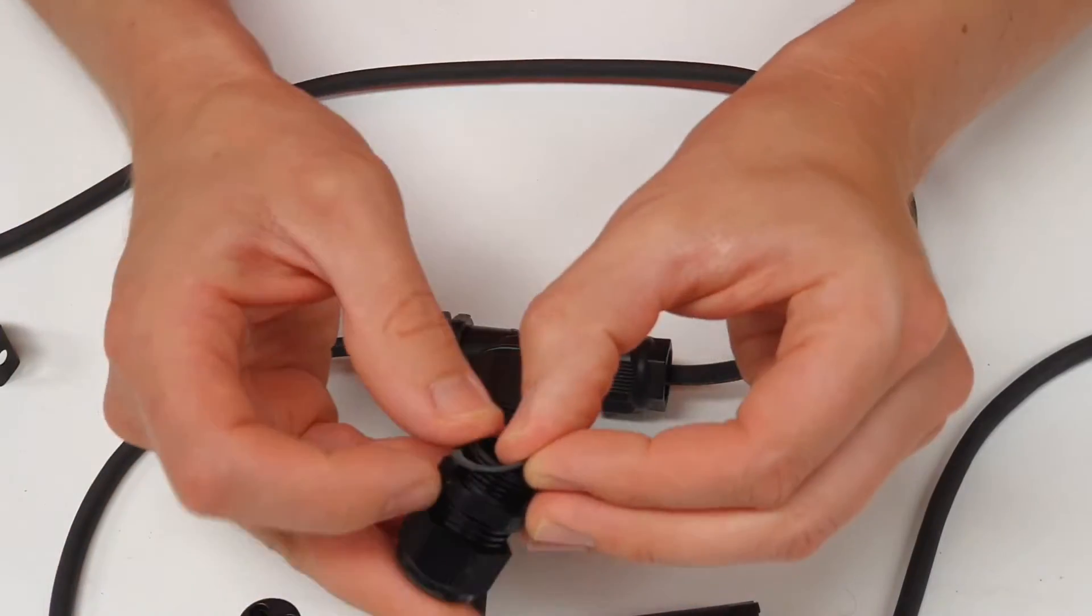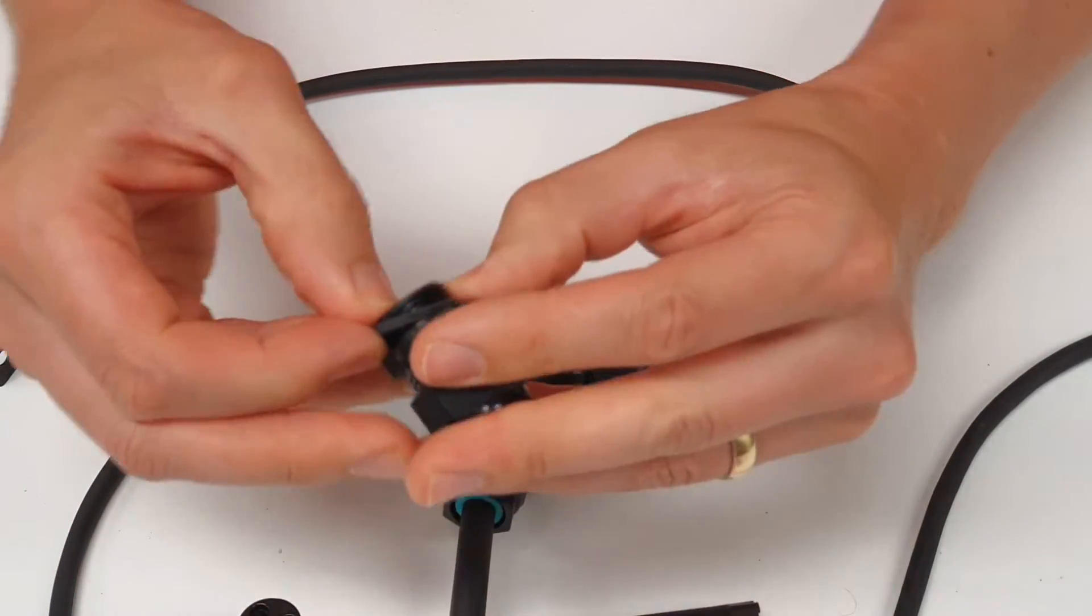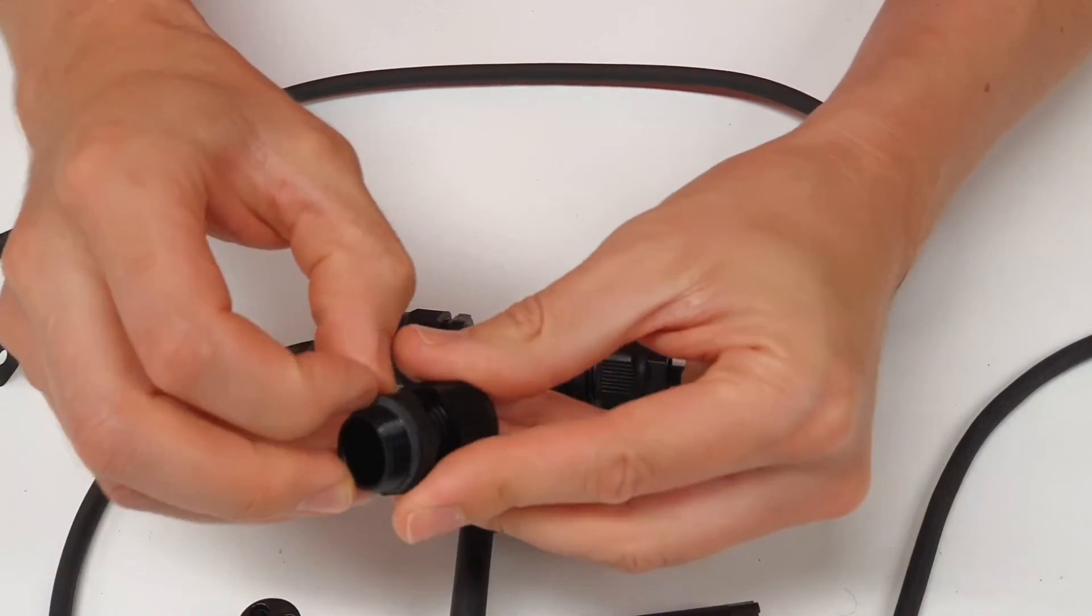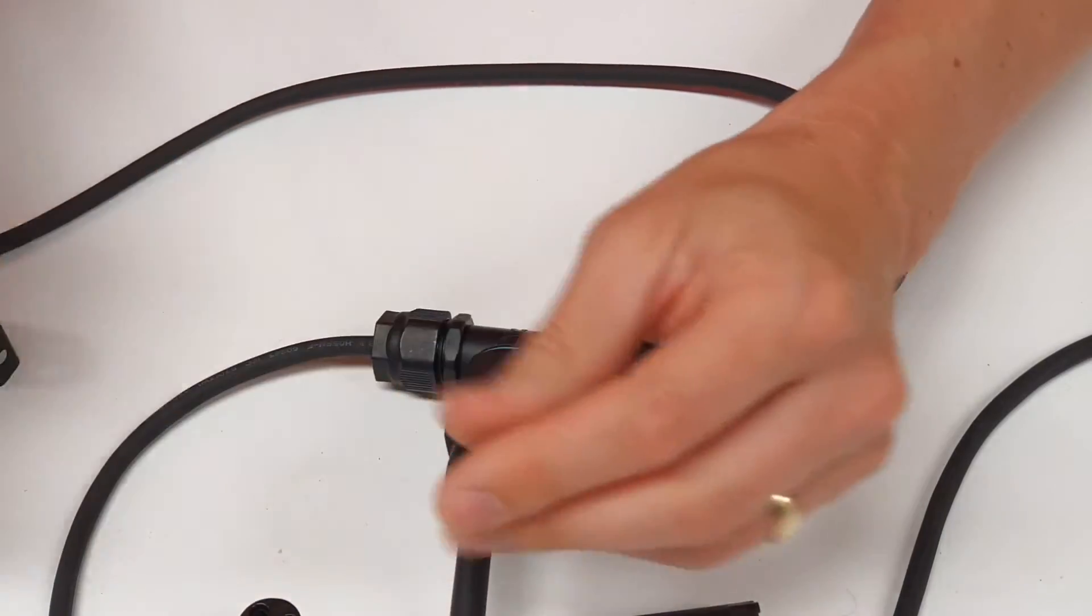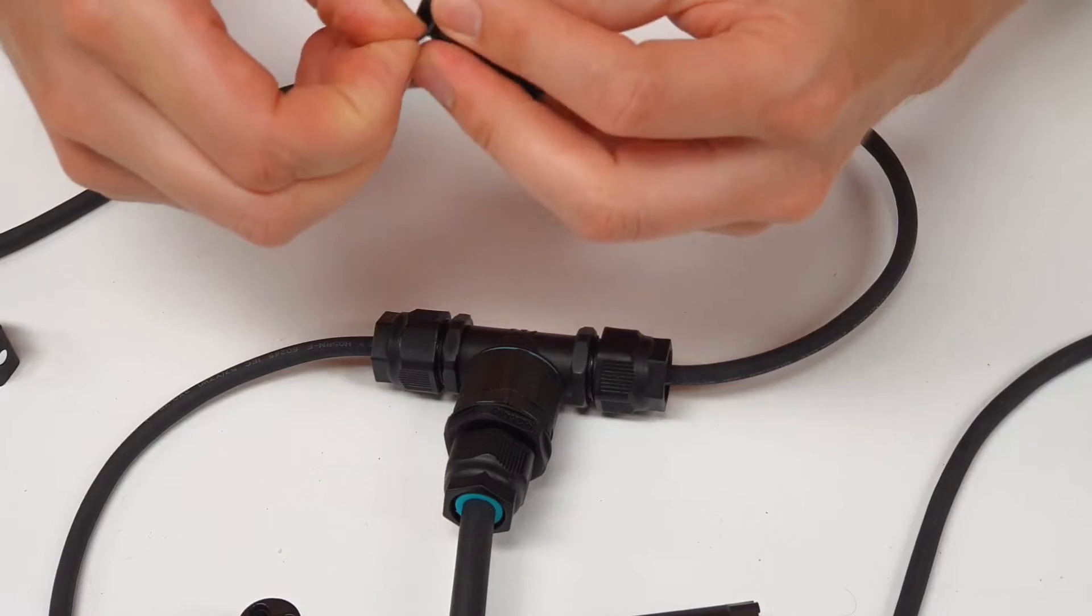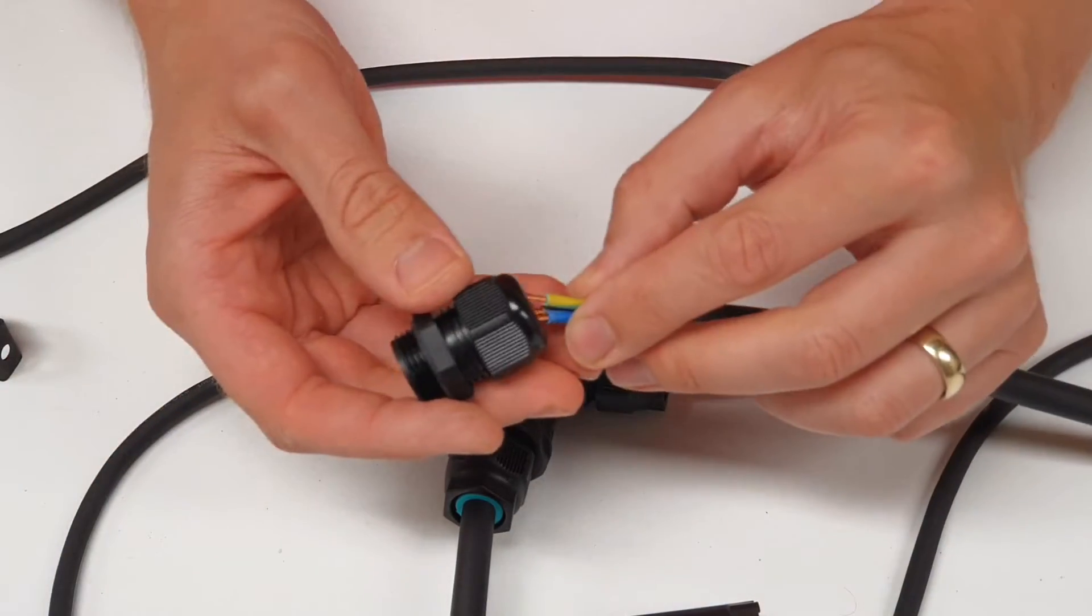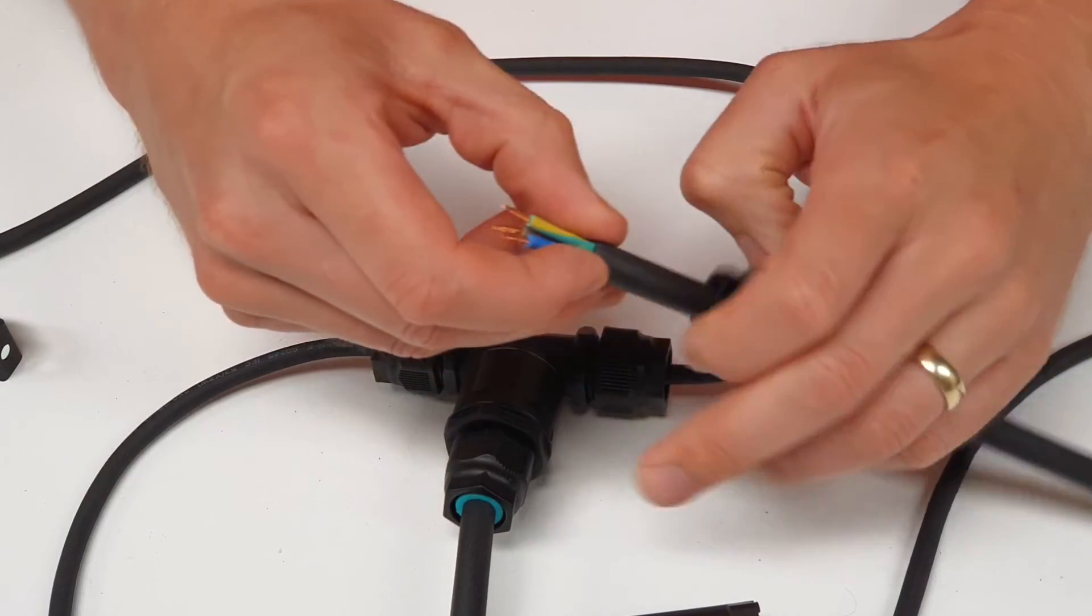First of all make sure you pop the neoprene washers provided onto the glands making sure they're right up against the shoulder of the gland there. Now don't forget this or you're going to kick yourself when you're taking it all apart again.